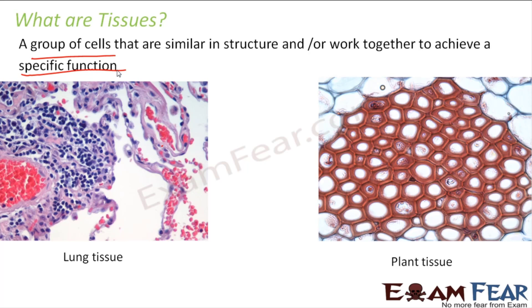Here we have two pictures — a plant tissue and a lung tissue, which is an animal tissue. The picture may look weird, but this is how a tissue actually looks under a microscope. The plant tissue is made up of so many cells grouped together. Similarly, the lung tissue is an animal tissue — the cells inside the lung have grouped together to specialize in a particular function, forming the lung tissue.